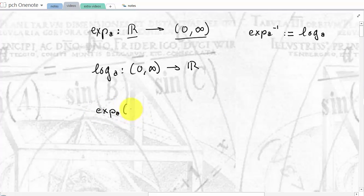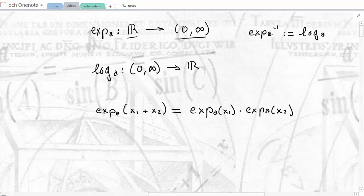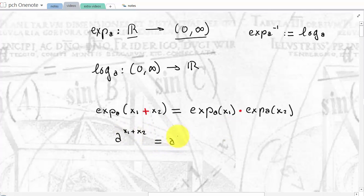Recall that the exponential base a function is defined from R into (0, ∞). It is a one-to-one function, therefore it has an inverse. By definition, the name of the inverse is log base a, defined from (0, ∞) to R. The most important property of an exponential function is that it transforms a sum x₁ plus x₂ into a product: exp base a of x₁ times exp base a of x₂. This is just the formula a^(x₁+x₂) = a^x₁ · a^x₂.